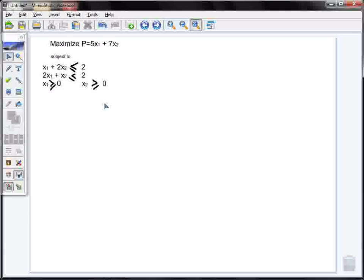So the first thing I want to do is set up my equation or my tableau. So I'm going to change my maximize function to the following. I will then have p minus 5x1 from both sides and subtract 7x2 from both sides. This leaves me with zero.